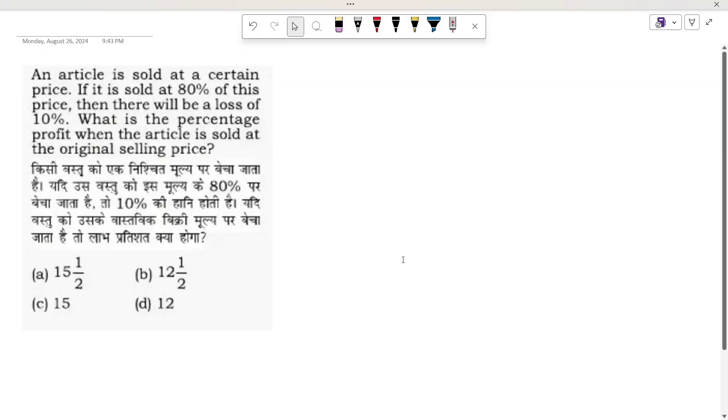See what is given in this question. An article is sold at a certain price. If it is sold at 80% of this price, then there will be a loss of 10%.